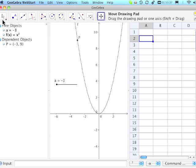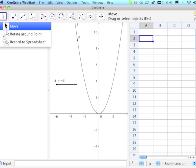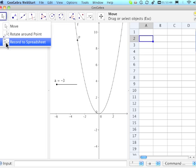I'm going over to the arrow tool. Now that my spreadsheet's open, I have a record to spreadsheet, which I select. It tells me to select an object to trace, then change the construction. The object I want to trace is the point P. So in the algebra window, I'm going down to the P and selecting it. And now what I'm going to do is move the slider slowly to the right, and you see we will be filling in the chart.